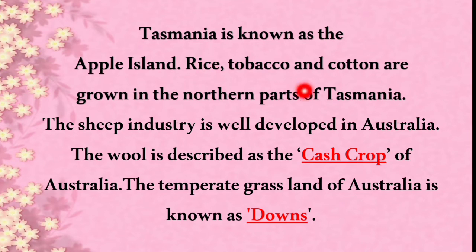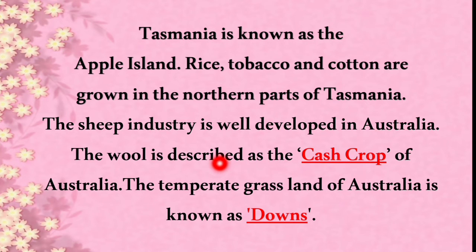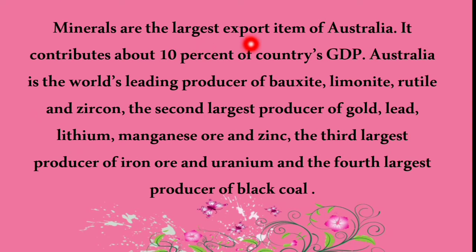The sheep industry is well developed in Australia, and wool is described as its cash crop. The temperate grassland of Australia is called Downs. Minerals are the largest export item of Australia, contributing about 10% of the country's GDP. Australia is the world's leading producer of bauxite, limonite, rutile and zircon, and the second largest producer of gold, lead, lithium, manganese ore and zinc.